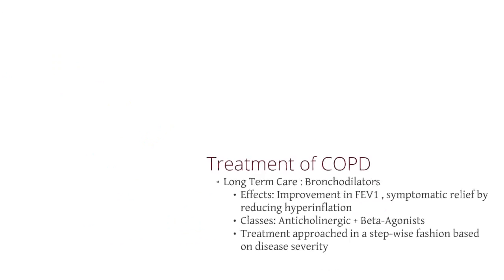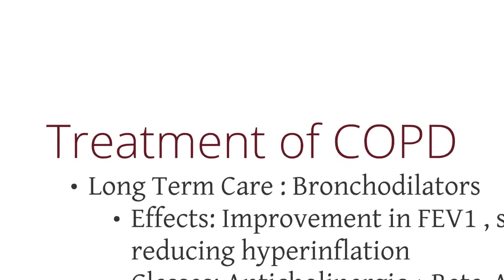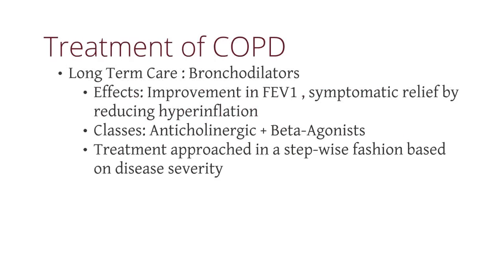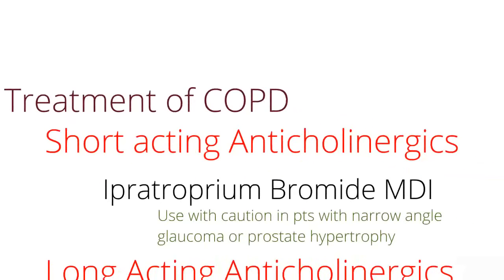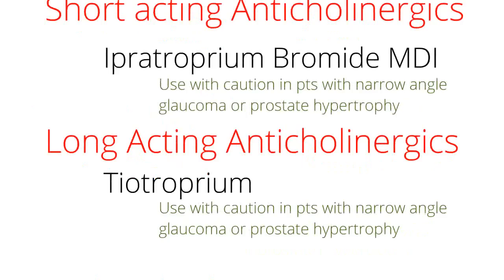Now let's look at some active interventions. The long-term care for COPD is the use of bronchodilators. Bronchodilators improve your FEV1 and provide symptomatic relief by reducing the hyperinflation characteristic of COPD. There are two classes of bronchodilators: anticholinergics and beta agonists. The most commonly used short-acting anticholinergic is ipratropium — use this with caution in patients with narrow-angle glaucoma or prostate hypertrophy. Long-acting anticholinergics include tiotropium, with very similar side effects. Because of the anticholinergic properties, they may worsen these conditions.